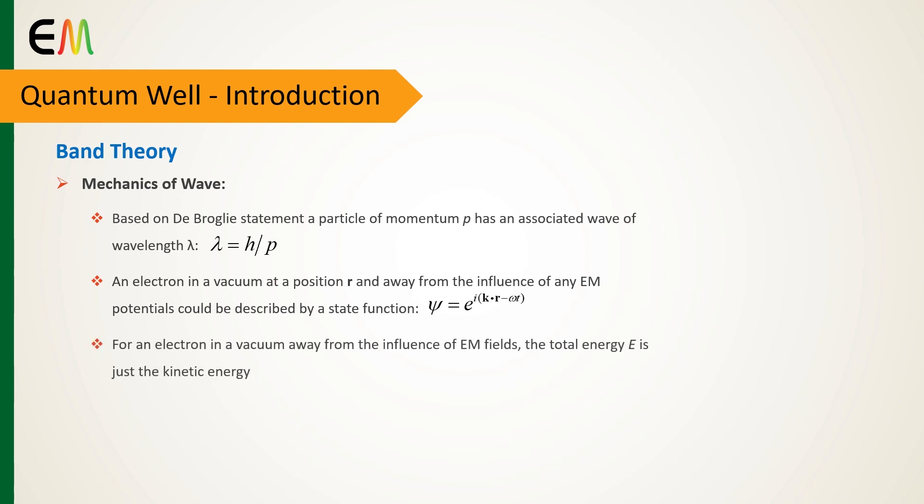For an electron in a vacuum away from the influence of any electromagnetic fields, the total energy is just the kinetic energy T = mv²/2m = p²/2m = ℏ²k²/2m. Therefore, the dispersion energy curves are as shown in this figure.